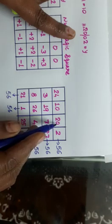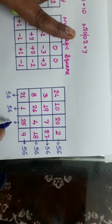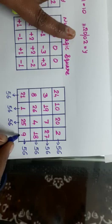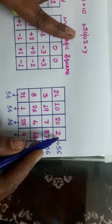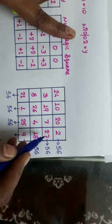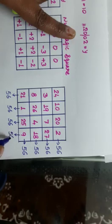Right? 25 plus 20, it is 45 plus 7 plus 4, it is 11. It is 56. And 18 plus 2, 20. 20 plus 27, it is 47 plus 9, it is 56.